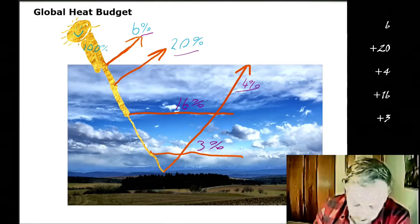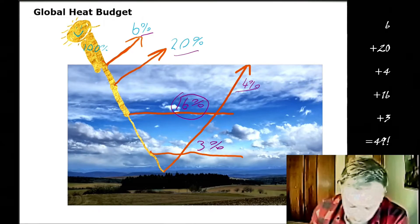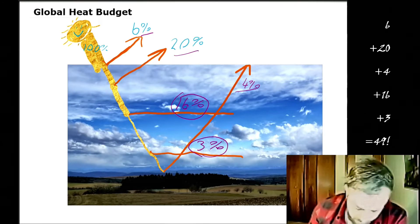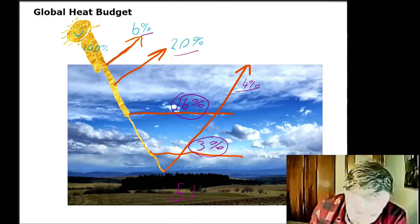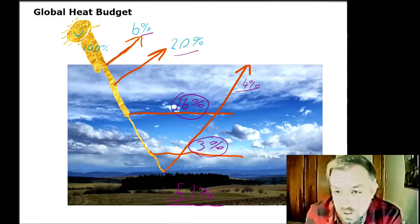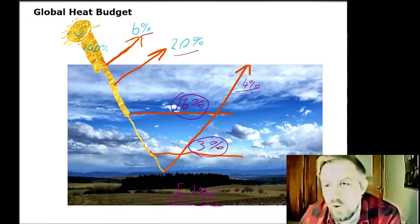Then we've got 16% that is absorbed by the atmosphere and 3% absorbed by clouds. Gives us our 49%. So only 51% is being absorbed by the surface of our planet and then eventually stays there for a while.